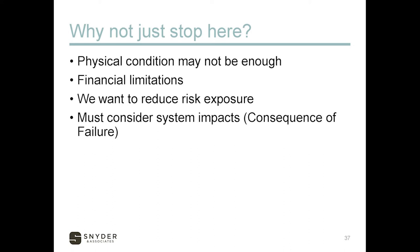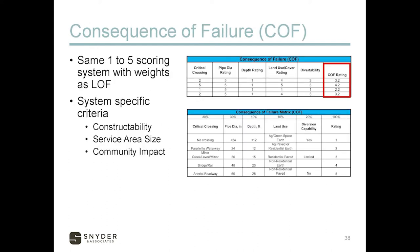The consequence of failure considers the system impacts as another factor in the risk calculation. It's scored on a similar one-to-five scale and is also customizable for different consequences. The project we've been talking about identified factors including critical crossings — is it crossing a waterway, underneath a bridge, or along an arterial roadway that would be a major issue if it failed? How big is the pipe, which relates to how many people it serves?